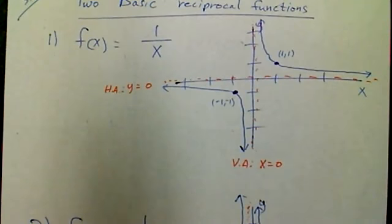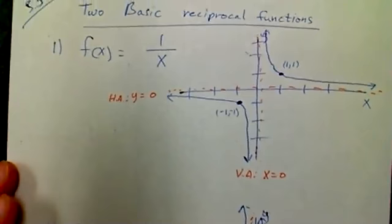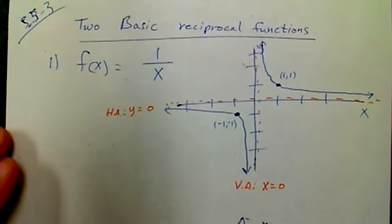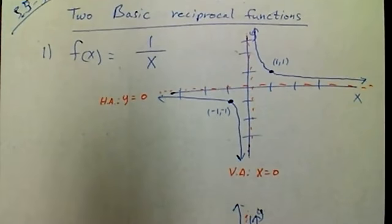Okay guys, so continuing on section 3.5, we already did those two basic examples. I want to look at a few other types. We also introduced two basic reciprocal functions, so this is one of those things where you want to make sure you read the beginning of the section, especially for this 3.5. The reciprocal function is basically just f of x equals 1 over x.